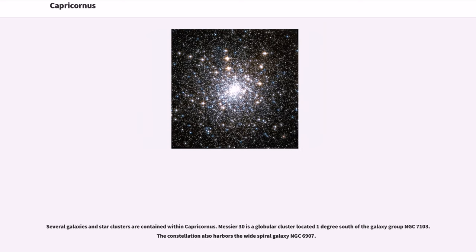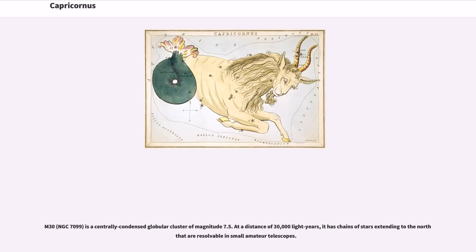Several galaxies and star clusters are contained within Capricornus. Messier 30 is a globular cluster located one degree south of the galaxy group NGC 7103. The constellation also harbors the wide-spiraled galaxy NGC 6907. M30, NGC 7099, is a centrally condensed globular cluster of magnitude 7.5. At a distance of 30,000 light-years, it has chains of stars extending to the north that are resolvable in small amateur telescopes.